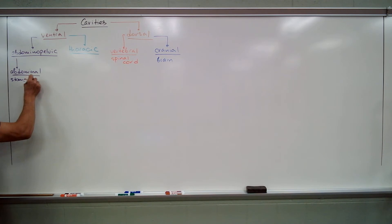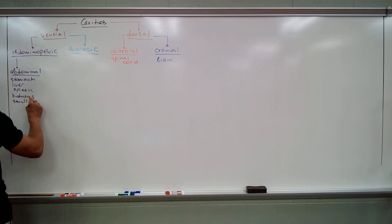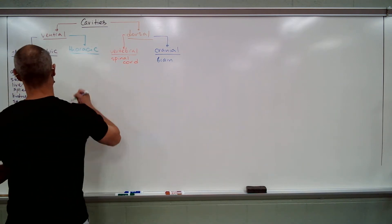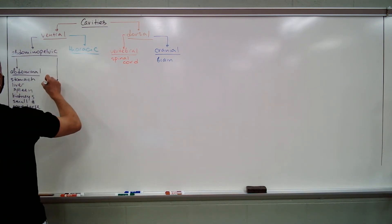Stomach, liver, spleen, kidneys, small and some large intestine. I probably forgot something, but I mean, yeah, adrenal glands, they're on top of kidneys. Yeah, no shit, they're there.